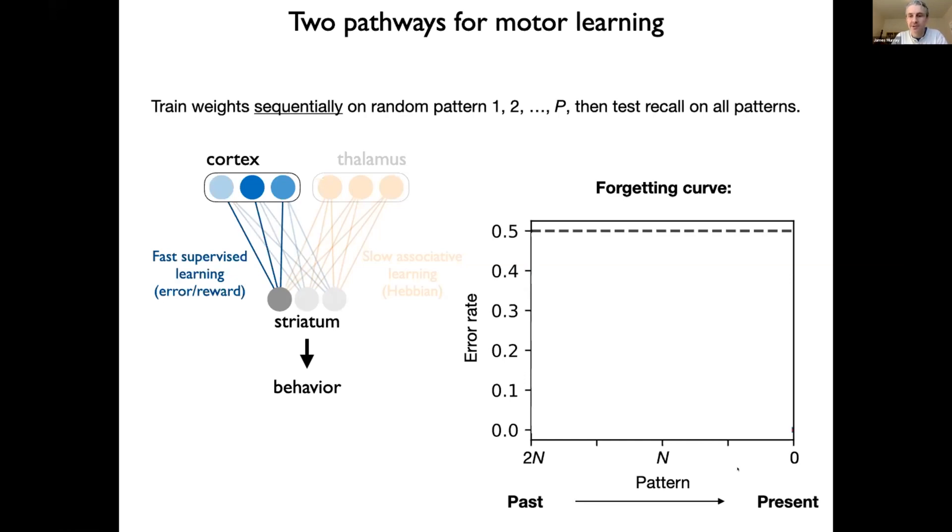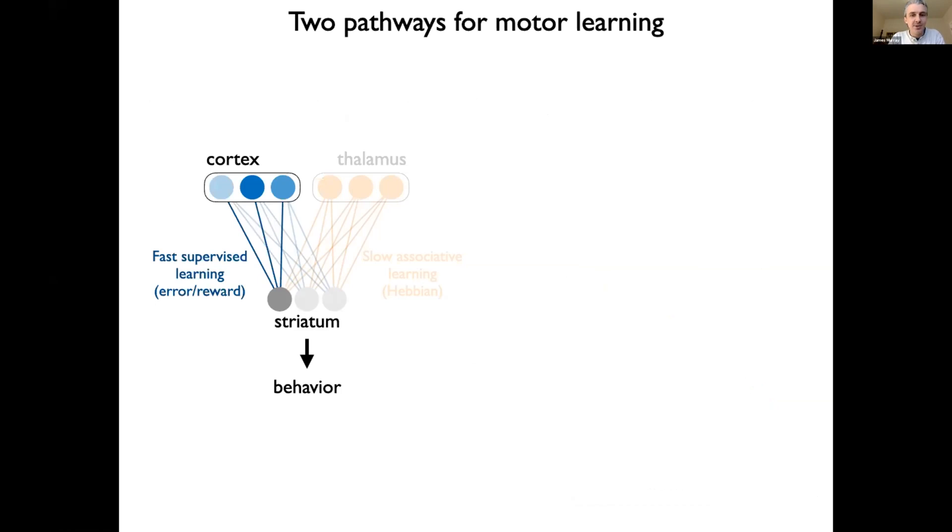So we expect the error rate to be low for recently learned patterns over on the right, and to be close to chance level for old patterns that have been overwritten by subsequent learning. And so we can simulate or calculate this curve, and it looks something like this, like what we'd expect. I'll just mention that the mathematical theory for calculating this turns out to be rather rich. It's a drift diffusion model in a high dimensional space of synaptic weights. If that sounds like fun to you, then please see the appendix of our paper for details. So that is with just the first pathway, what do we get extra if we add the second pathway in this model? So still just considering a single neuron.